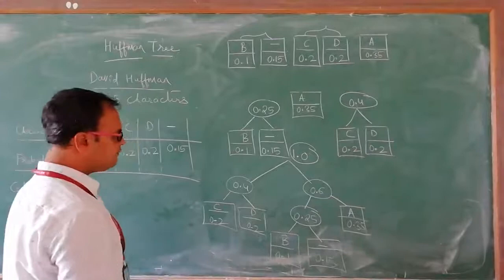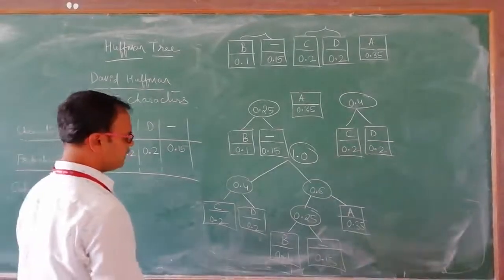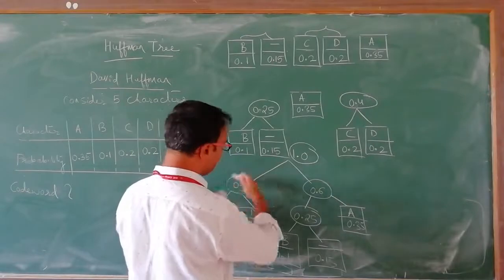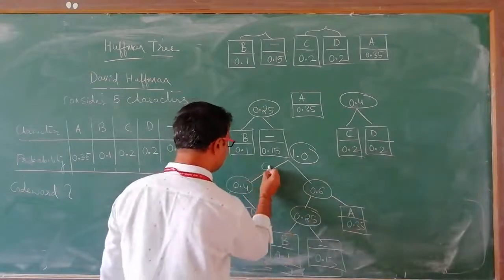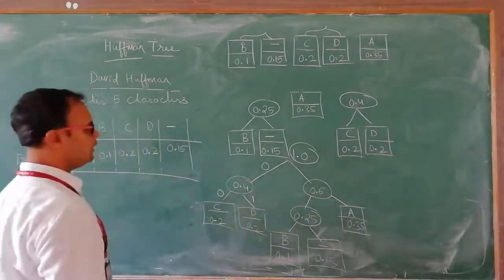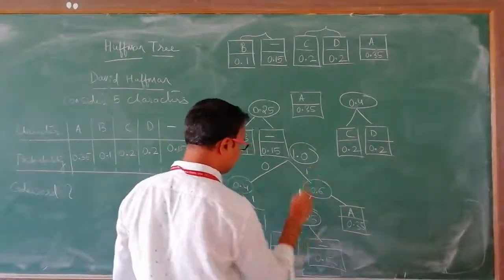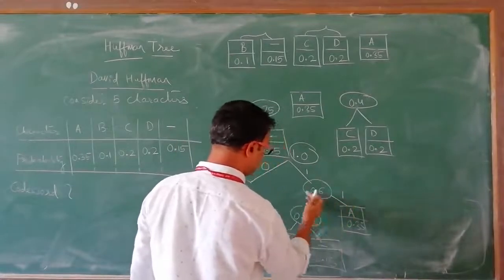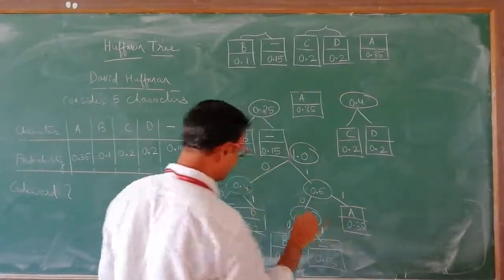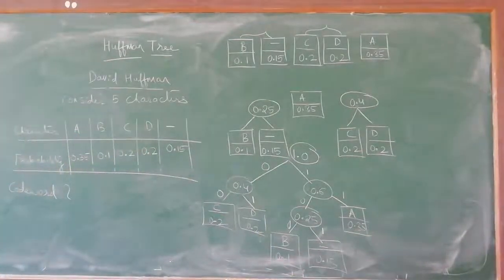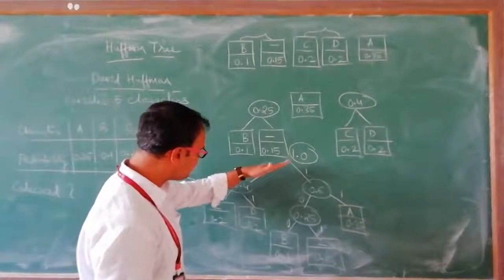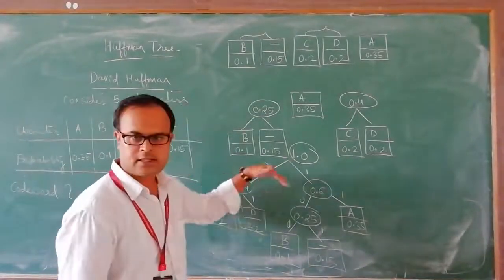Once we generate the final Huffman Tree, what we have to do is assign codes for left child and right child. Left child is assigned 0 and right child is assigned 1. So we assign 0 to all left children and 1 to all right children throughout the tree.